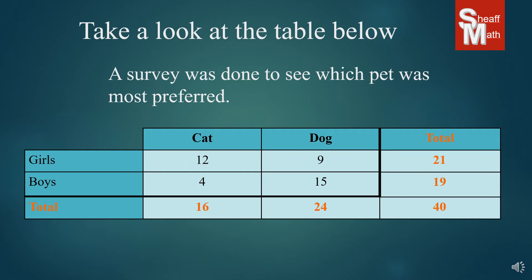I always suggest putting a total column and a total row so that you can see exactly how many girls and boys there were, how many cat lovers and dog lovers, and then the grand total in the bottom right, which is 40. This is very important, so I'm always going to tell you to put in your total columns and rows.